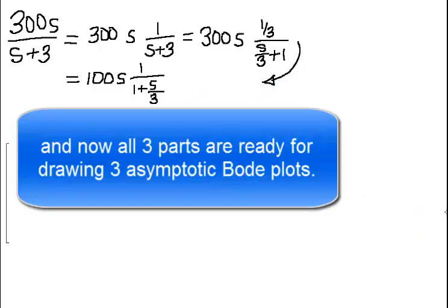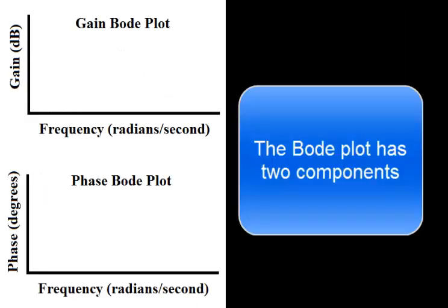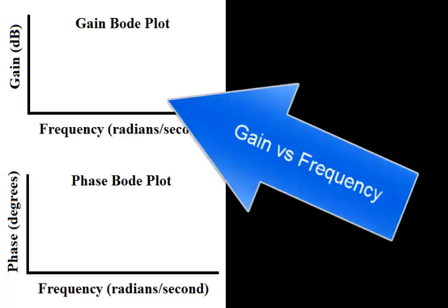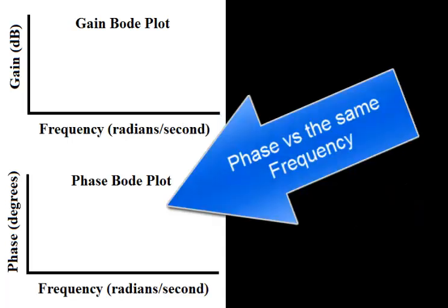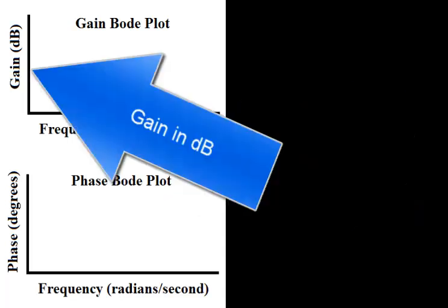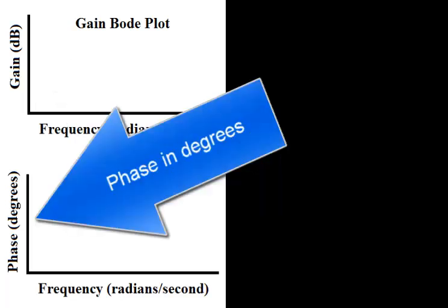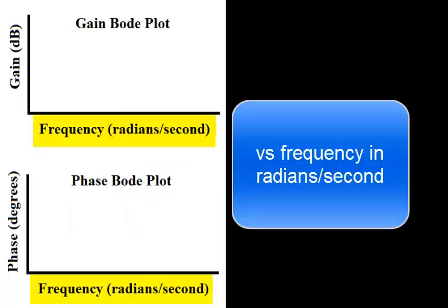And now all three parts are ready for drawing three asymptotic Bode plots. The Bode plot has two components: gain versus frequency, and phase versus the same frequency. Gain is measured in dB, phase is measured in degrees, versus frequency in radians per second.